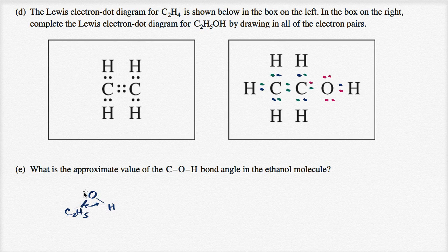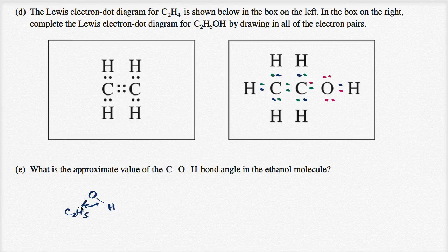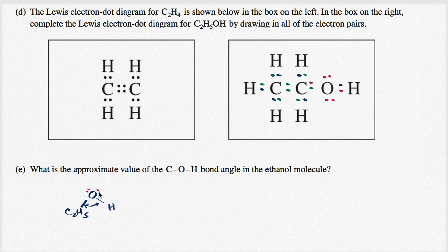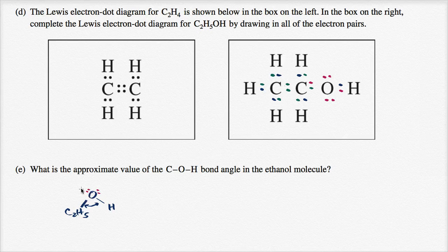And the important thing to realize is, when you form these bonds with oxygen, it's going to have pretty close to a tetrahedral shape. Why? Because the oxygen has these two lone pairs. So these two lone pairs are forming the other points of the tetrahedral shape.